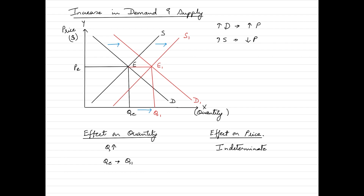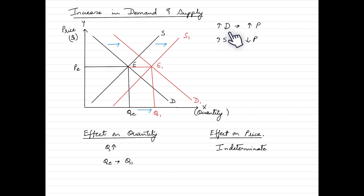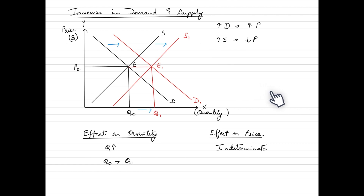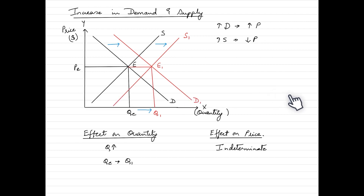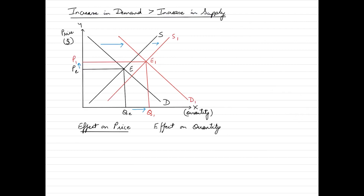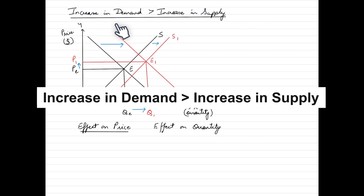The effect on price is indeterminate. The effect on price depends greatly upon how strong the increase in demand is, or how weak the increase in supply is, or the other way around. Let's take a look at each of these scenarios and see how the strength or magnitude of the change in supply or demand would impact the price.